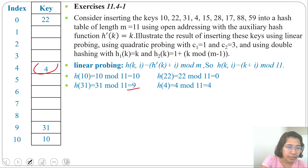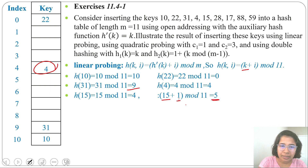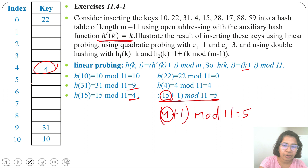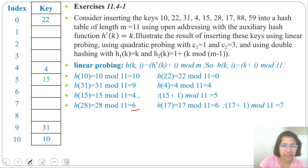4 is inserted at index 4. Next key is 15. 15 mod 11 is 4, but 4 is already filled so there is a collision. We use linear probing: 15 + 1 mod 11 = 16 mod 11 = 5. Since h'(k) = k, we compute 4 + 1 mod 11 = 5. The 5th slot is empty, so we insert 15 at slot 5. Next, 28 divide 11 remainder is 6; the 6th slot is empty so we insert 28 at slot 6.